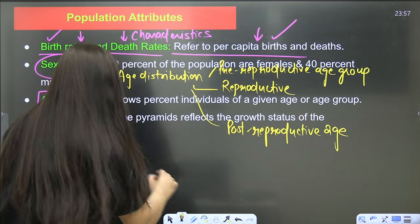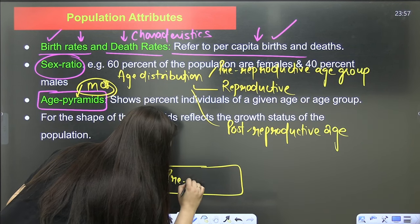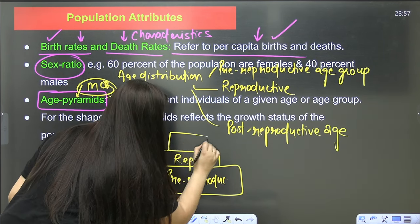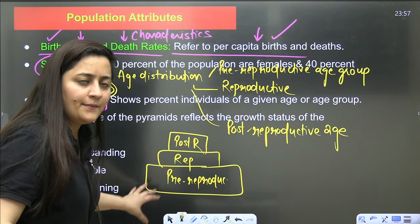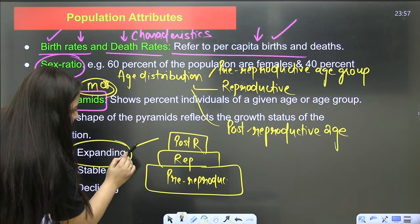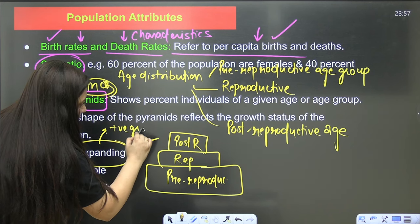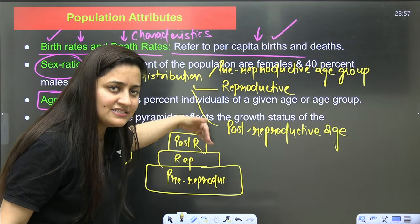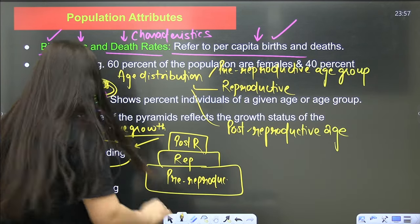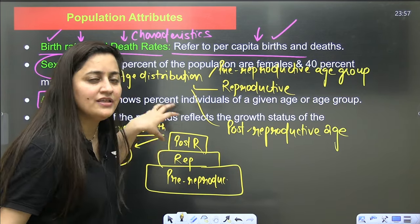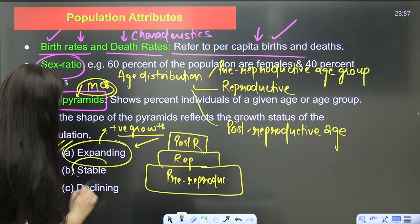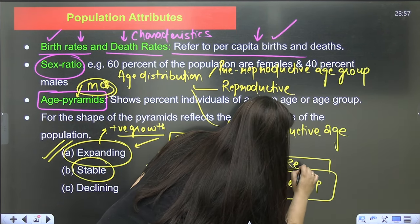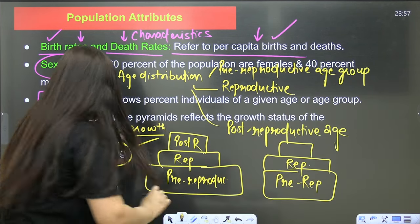MCQs can come from age pyramids. The pre-reproductive age group is always kept at the base, then reproductive, then post-reproductive. When you have such a triangular age pyramid — more pre-reproductive, less reproductive, least post-reproductive — it means the population is expanding, showing positive growth.